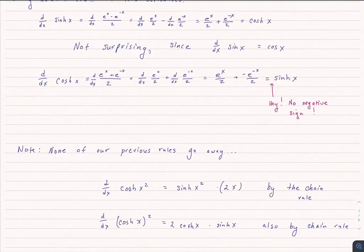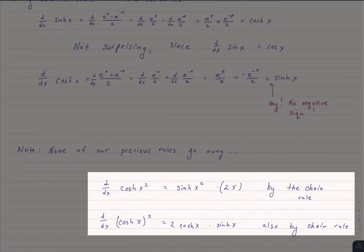I do want to give two quick examples to remind you that all the other rules that we came up with before, like the chain rule, they don't go away. So if I looked at the hyperbolic cosine of x squared, that would be sinch x